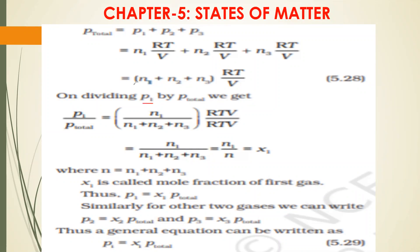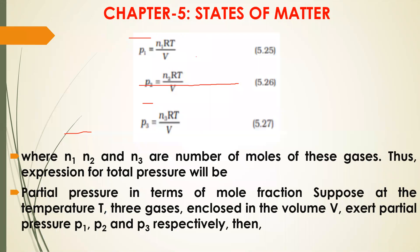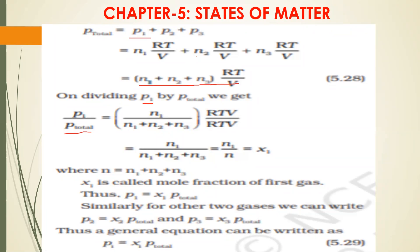To find P1 divided by P_total: P1 equals n1·RT/V, and P_total equals (n1 + n2 + n3)·RT/V. When you divide P1 by P_total, the RT/V terms cancel out, leaving n1 divided by (n1 + n2 + n3).